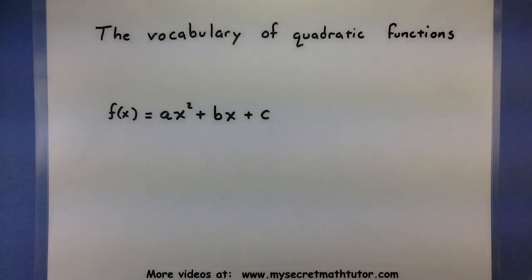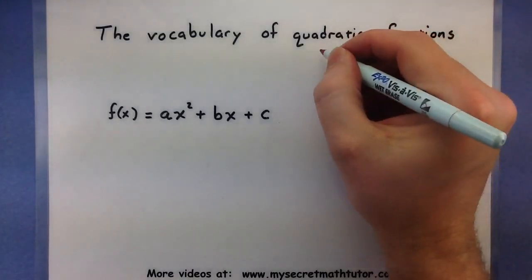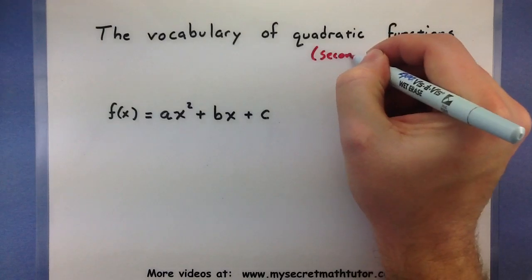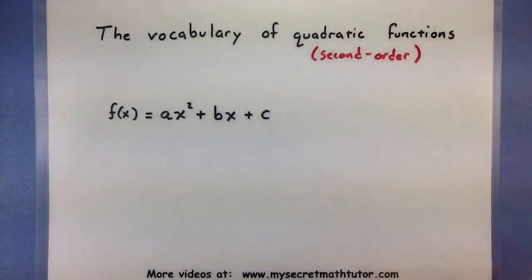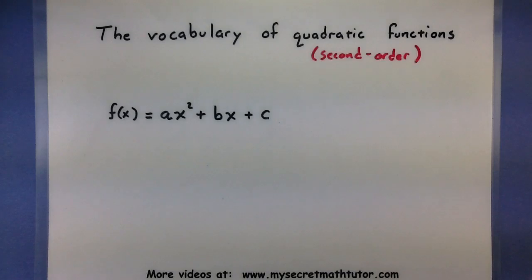A quadratic function is sometimes called a second-order equation. This is because the largest power present is 2.